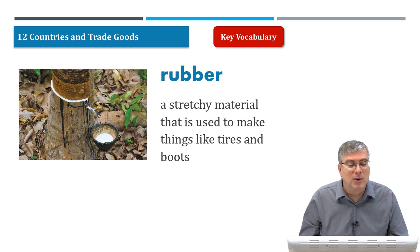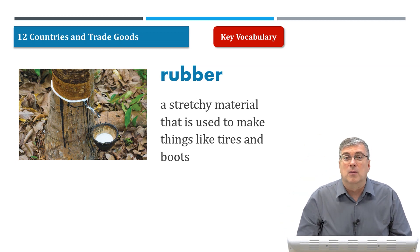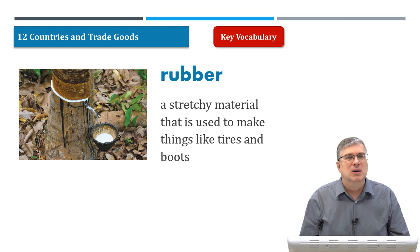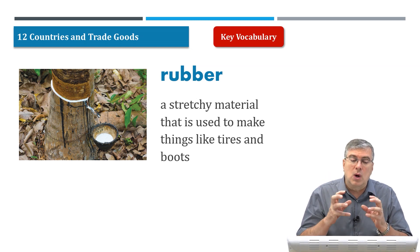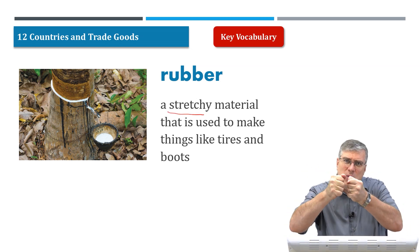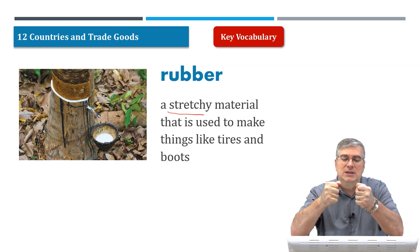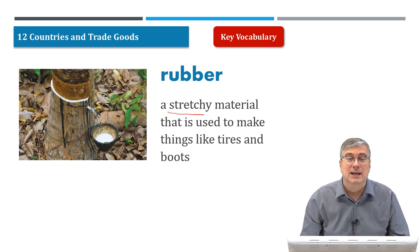Rubber. If you have a small ball that you can bounce off the floor, it's probably made out of rubber. The bottom of your shoes and the tires on your car are also made of rubber. Rubber is a stretchy material — stretchy means you can stretch it; if you pull it on either side, it moves a little bit and you have some flexibility. It's a stretchy material used to make things like tires and boots. Do you have a pair of rain boots? They are made of rubber and protect your feet from the rain.